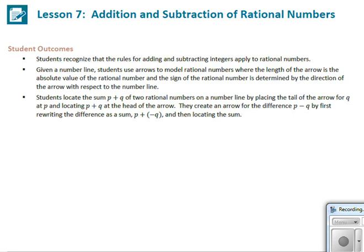Student outcomes for this lesson: Students recognize that the rules for adding and subtracting integers apply to rational numbers. Given a number line, students use arrows to model rational numbers, where the length of the arrow is the absolute value of the rational number, and the sign is determined by the direction of the arrow. Students locate the sum p plus q on a number line by placing the tail of the arrow for q at p and locating p plus q at the head of the arrow. They create an arrow for the difference p minus q by first rewriting the difference as a sum, p plus negative q, and then locating the sum.